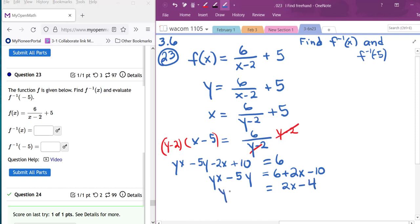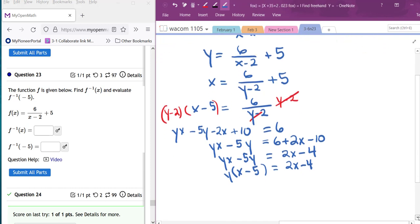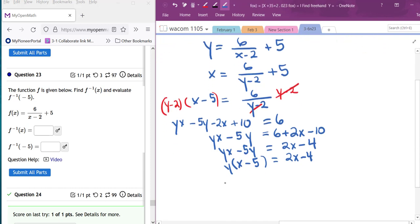Now on this side I have a GCF and I'm trying to isolate the y. So I'm going to take the y out of those. And now I can divide on both sides by the x minus 5 to isolate my y.